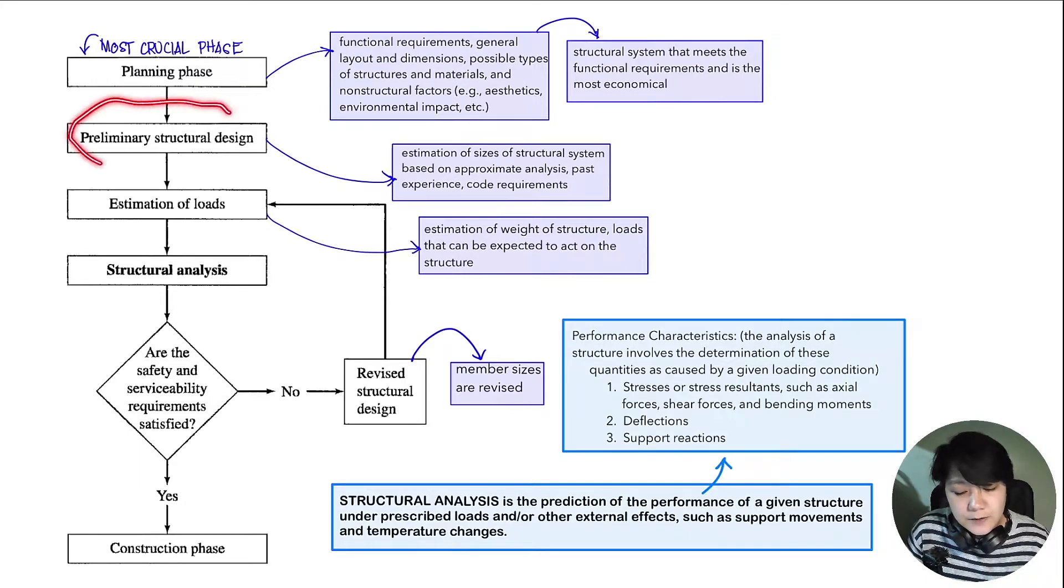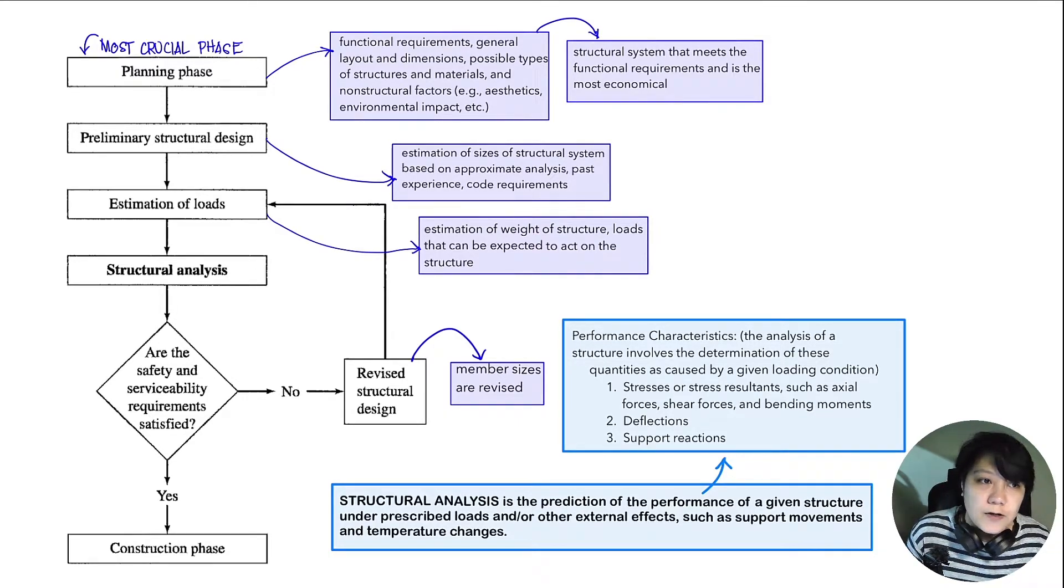The result of this planning phase would be a structural system that meets the functional requirements and is also economical. The next step would be your preliminary structural design. In this step, we are going to estimate the sizes or dimensions of your structural system or structural elements. This might require some experience for you to be able to make an estimation of the sizes of your beams, columns, that can carry the load of the structure. You can also use the minimum code requirements coming from our NACP.